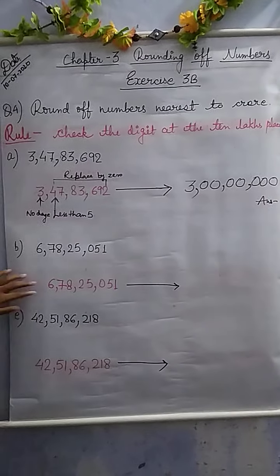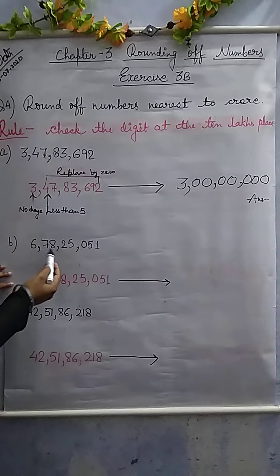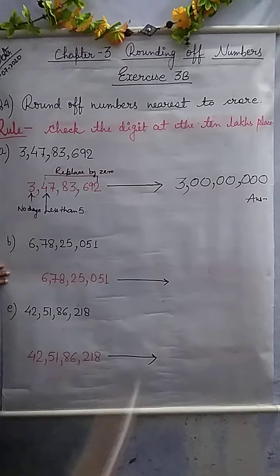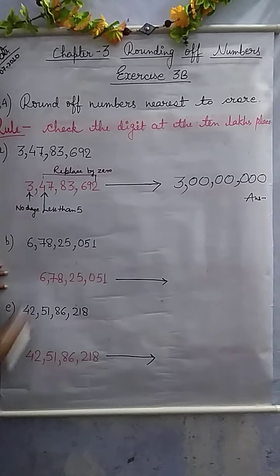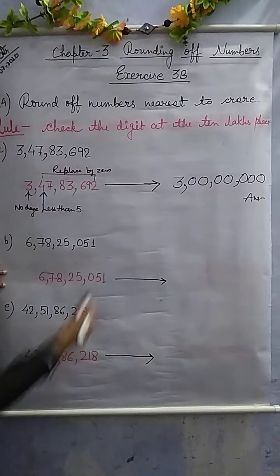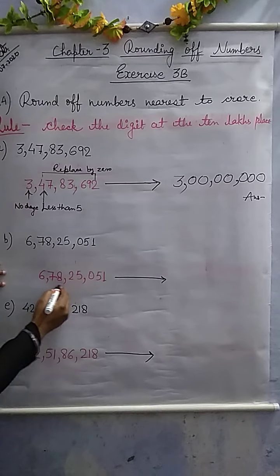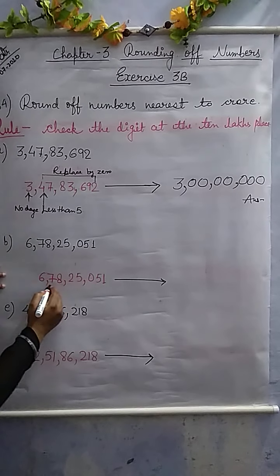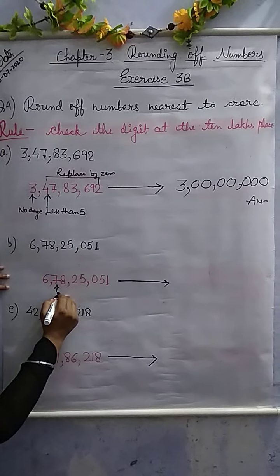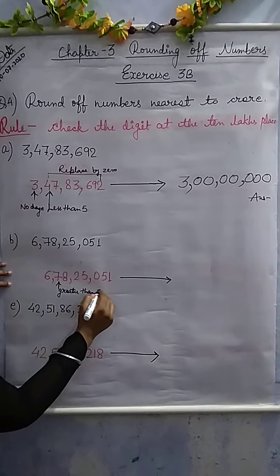Now another question — question number 4b: 6 crore 78 lakh 25,051. We write this in our solution and check at the 10 lakhs place. Ones, tens, hundreds, thousands, ten thousands, lakh, ten lakh. Here is 7 — that is greater than 5.